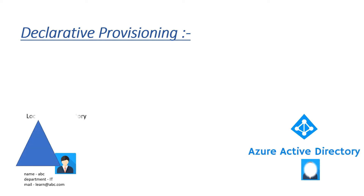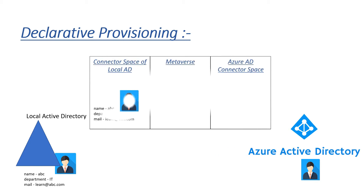Let's take a step back. In the process of getting a normal user object sent from local Active Directory to Azure Active Directory, the very first process that happens is an import, and in that a replica of that particular object will be created in the local AD connector space. Let's say I have a user with name ABC, department IT, and mail learn@abc.com — in the very first import cycle all these attributes will get imported and we'll see a replica in the local AD connector space.